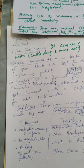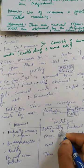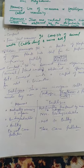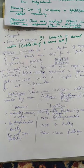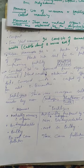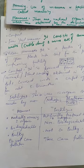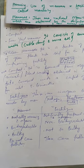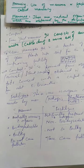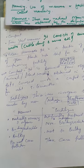To summarize: manures are naturally occurring, organic, and biodegradable; fertilizers are artificially prepared, inorganic, and non-biodegradable. There are two types of nutrients — macronutrients and micronutrients — and we increase the fertility of the soil by adding manures as well as fertilizers. In the next video we will discuss irrigation. Thank you very much.